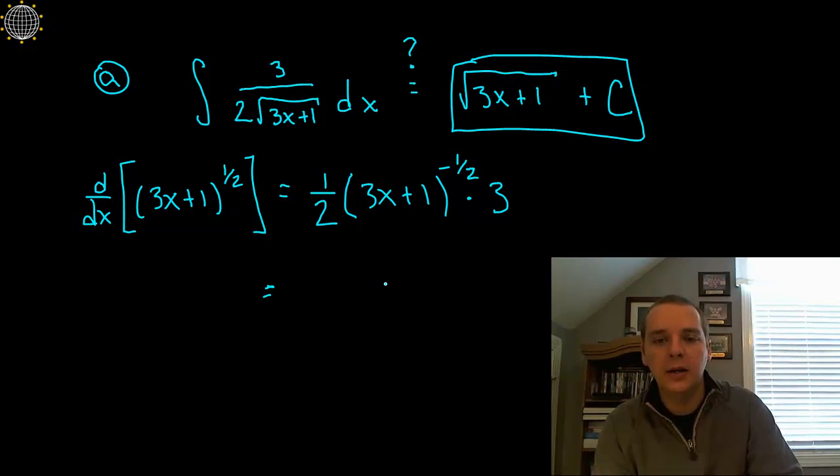Okay, rewrite all that. Looks like we'd have a big fraction and the denominator we'd have a 2. And then this negative exponent would bring this term down to the denominator, 3x plus 1.